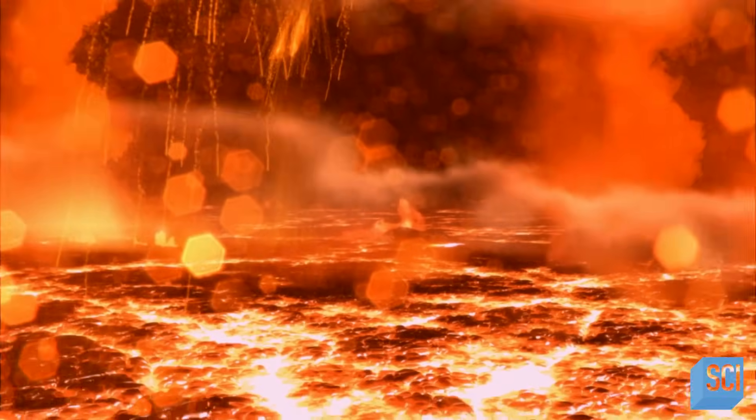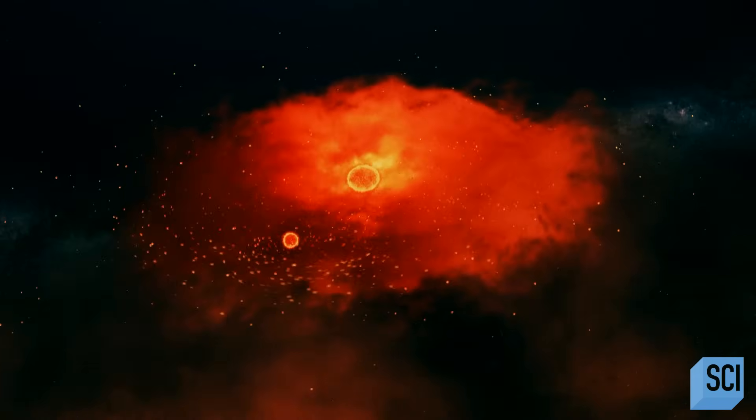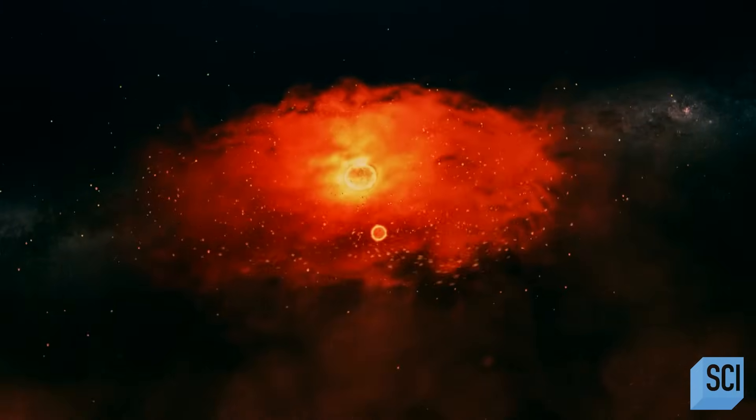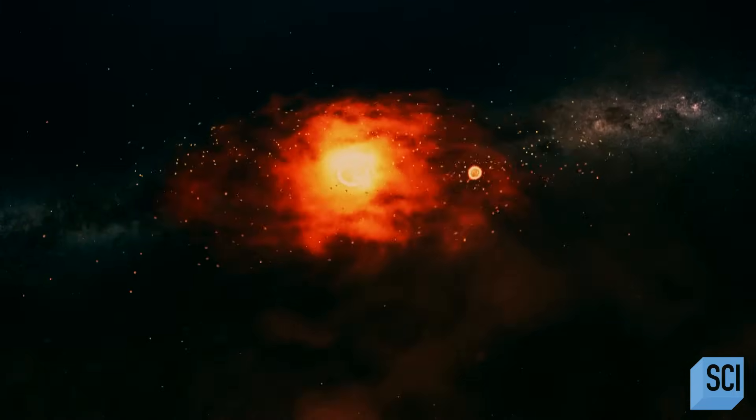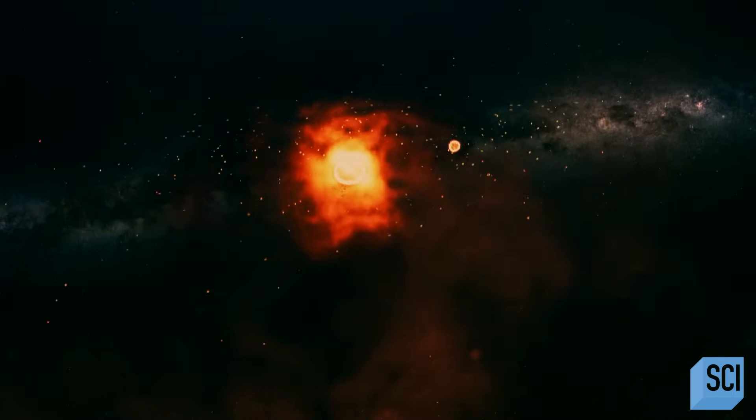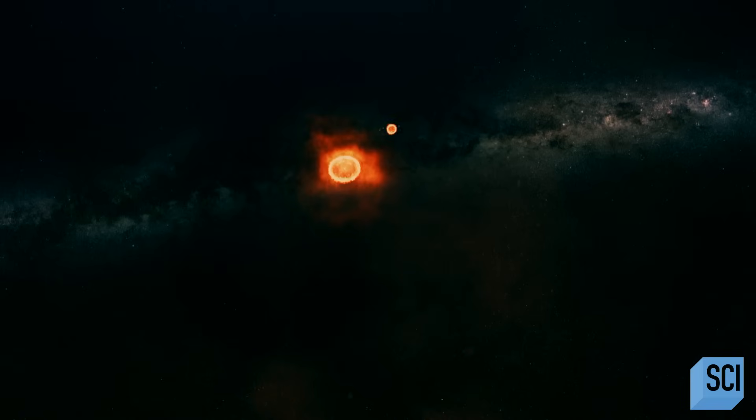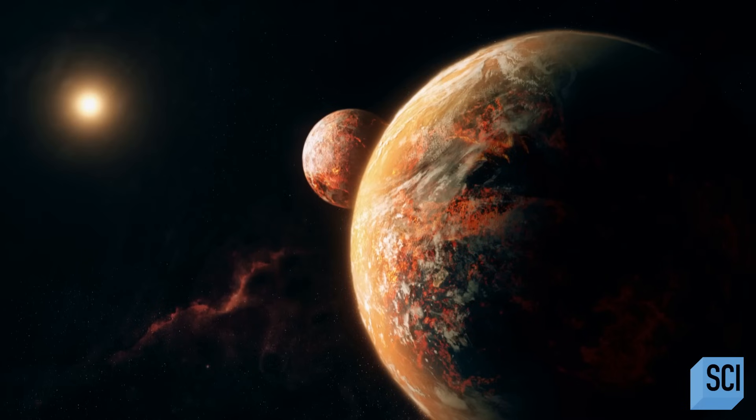Earth took the lion's share of material. The moon lived off scraps. But it did grab enough material to slowly emerge from a hail of molten rock. You would have had two really hot, mostly molten bodies in really close orbits to each other.